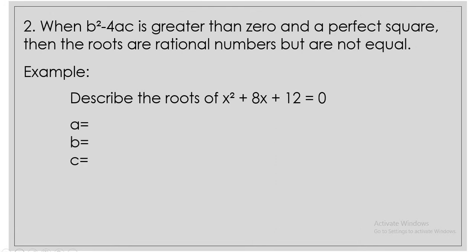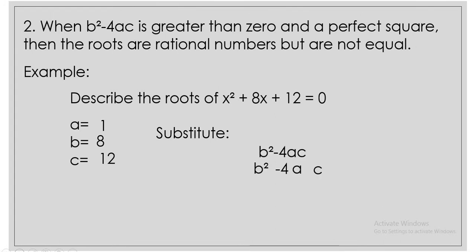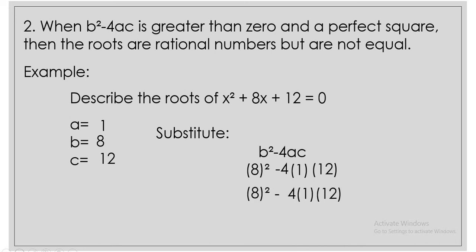So let's find the value of a, b, and c, which is 1, 8, and 12. Let us now substitute the values into the discriminant b squared minus 4ac. The value of b is 8, the value of a is 1, and the value of c is 12. So let us now simplify it. 8 squared is 64. 4 times 1 times 12 is 48. 64 minus 48 is 16.